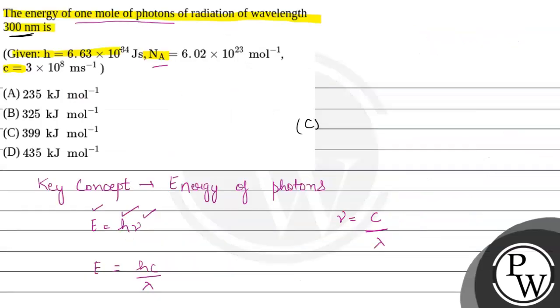So option C is the final answer: 399 kilojoule per mole. Options A, B, and D are incorrect. Hope you understood it well — best of luck.